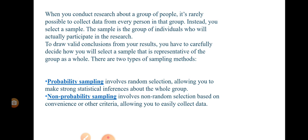There are two types of sampling methods. One is probability sampling and the other is non-probability sampling. Probability sampling involves random selection, allowing you to make strong statistical inferences about the whole group.